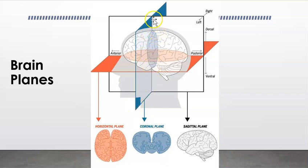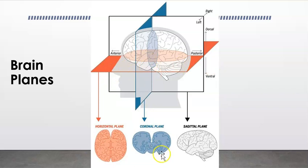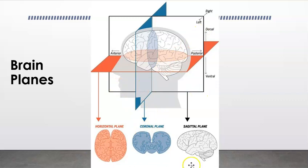If you're thinking about it as cutting, the coronal plane would be cutting it from ear to ear, all the way around — perpendicular to the floor, going from the front to the back. The final one is the sagittal plane. The sagittal plane is similar to the coronal plane in that it's perpendicular to the floor, but this one goes from left to right, whereas the coronal plane goes from front to back.